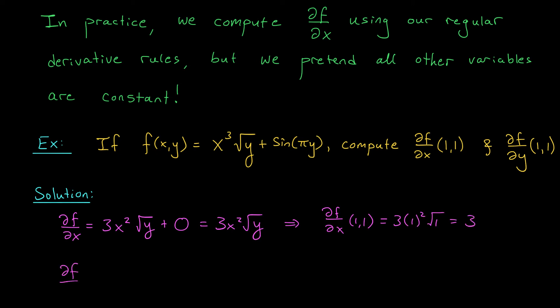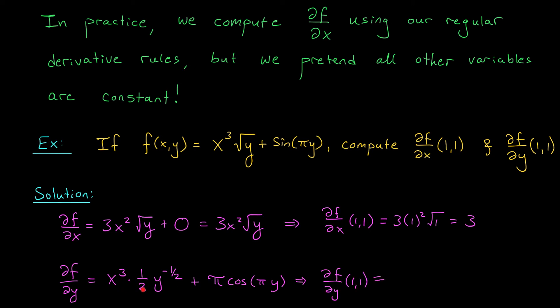We do the exact same thing for the partial derivative with respect to y. We take the derivative of the first term, pretending x is a constant, so x cubed is left alone. The derivative of root y is one-half y to the minus one-half. Now the derivative of the next term is not 0, because we're differentiating with respect to y — using the chain rule, I get pi cosine of pi y. At the point (1, 1), my partial derivative is: the first term becomes one-half, and the second term becomes pi cosine of pi. That gives one-half minus pi.